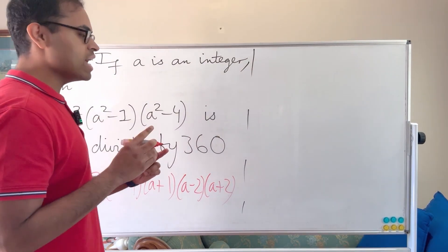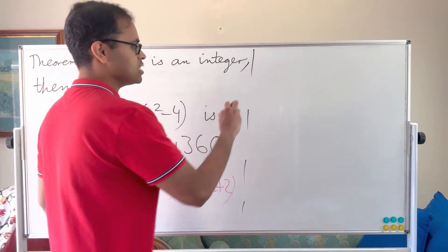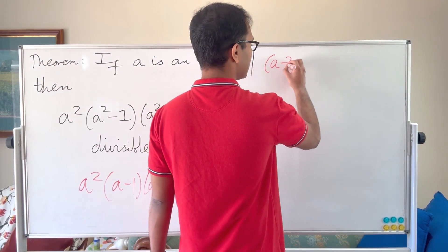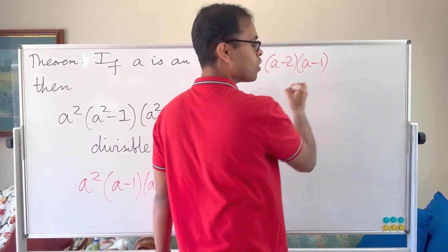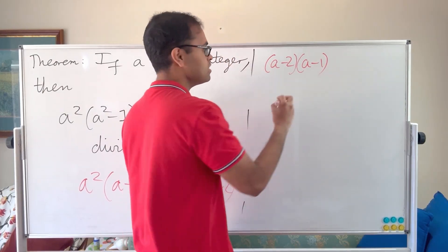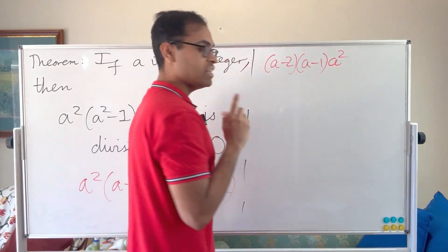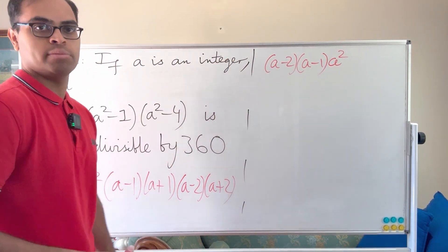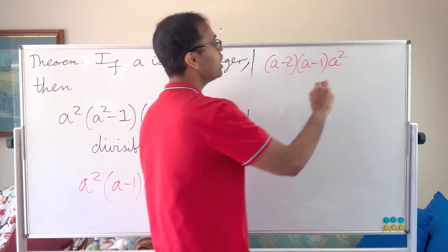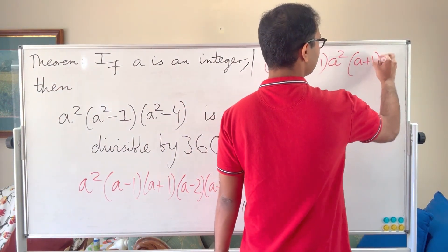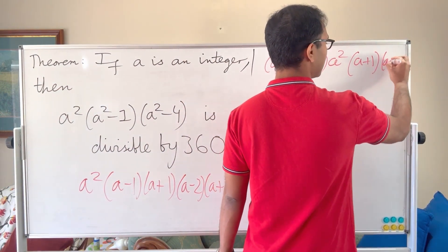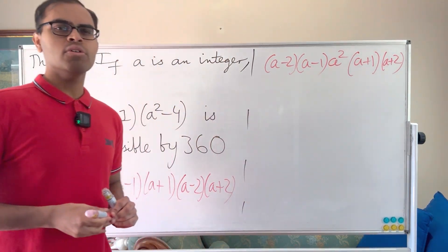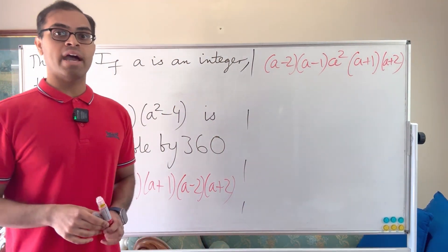So we almost get the product of 5 consecutive integers — not quite, but almost. We get a minus 2 times a minus 1 times a squared times a plus 1 times a plus 2. So a is coming with a square — this is going to be very important. We need the square to show it's divisible by 360, and that's going to come up in the proof.